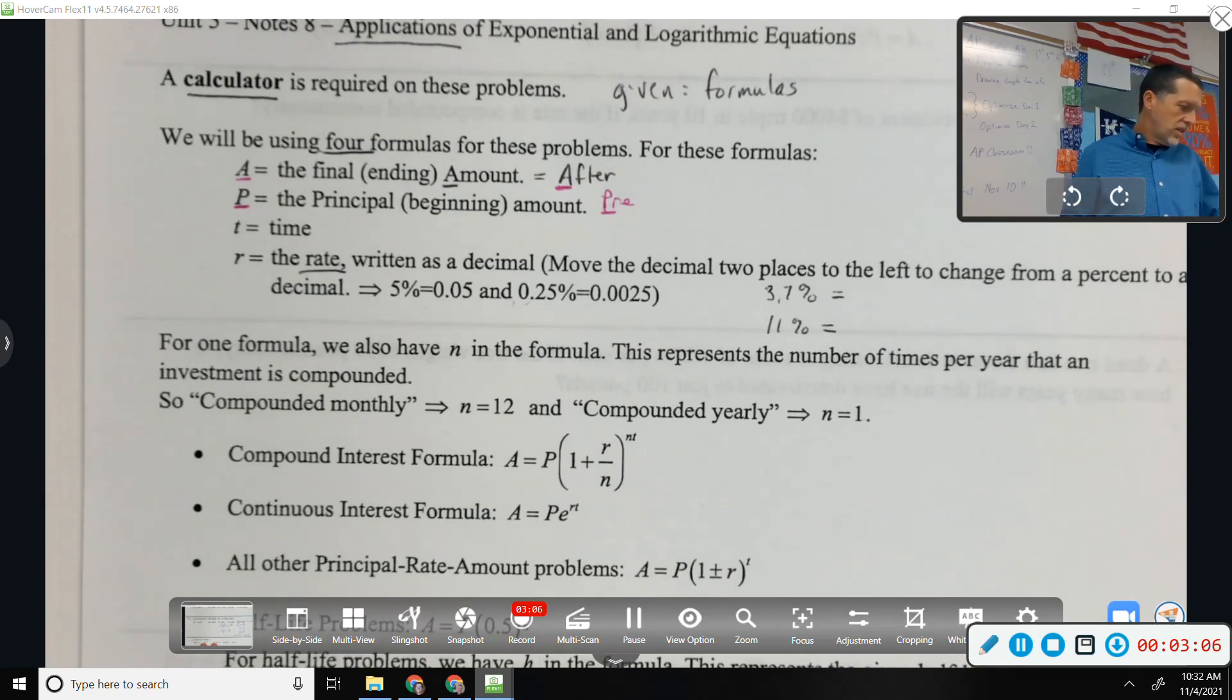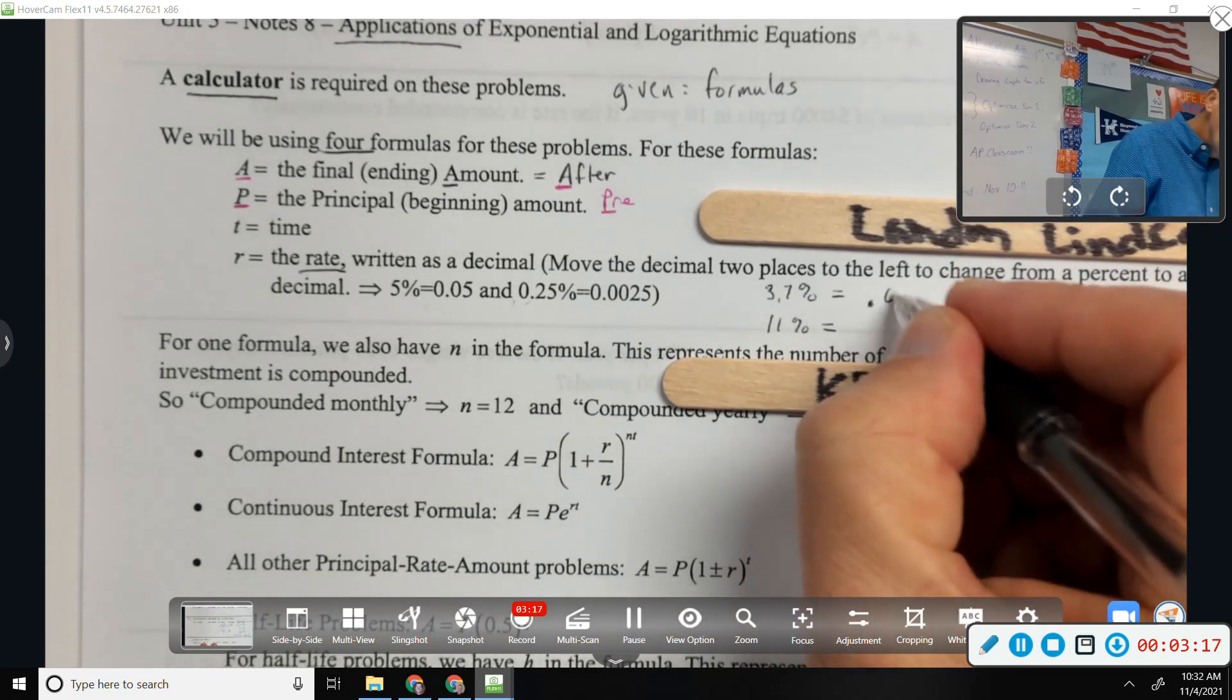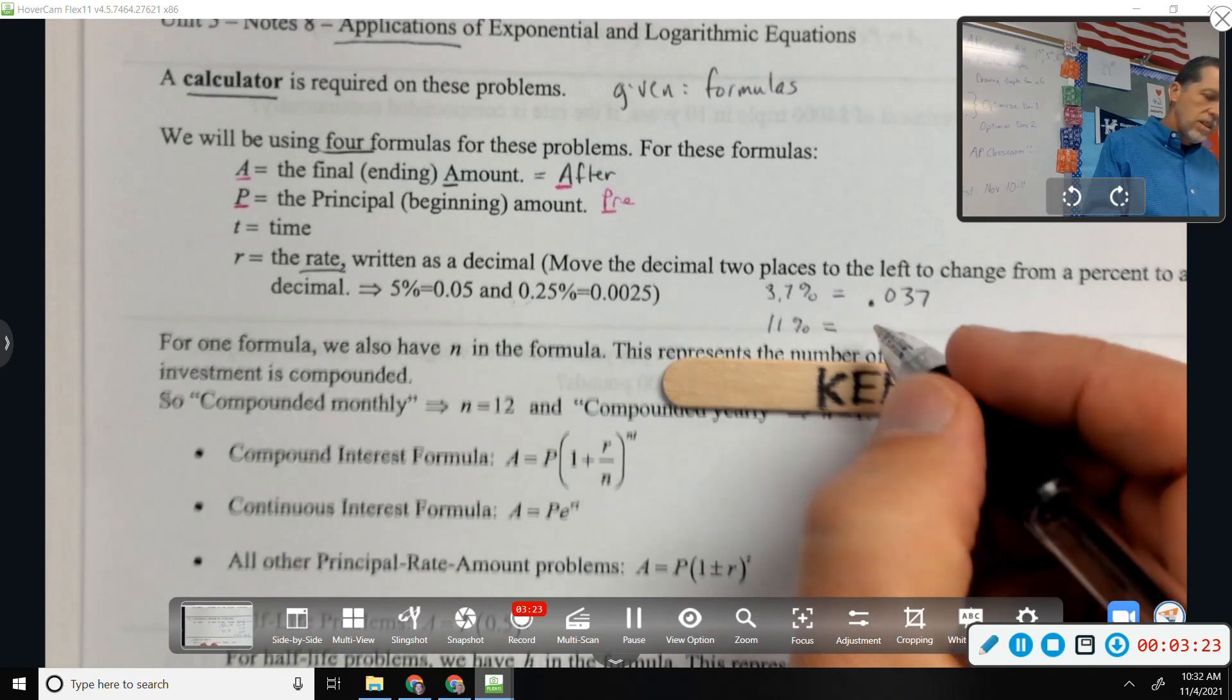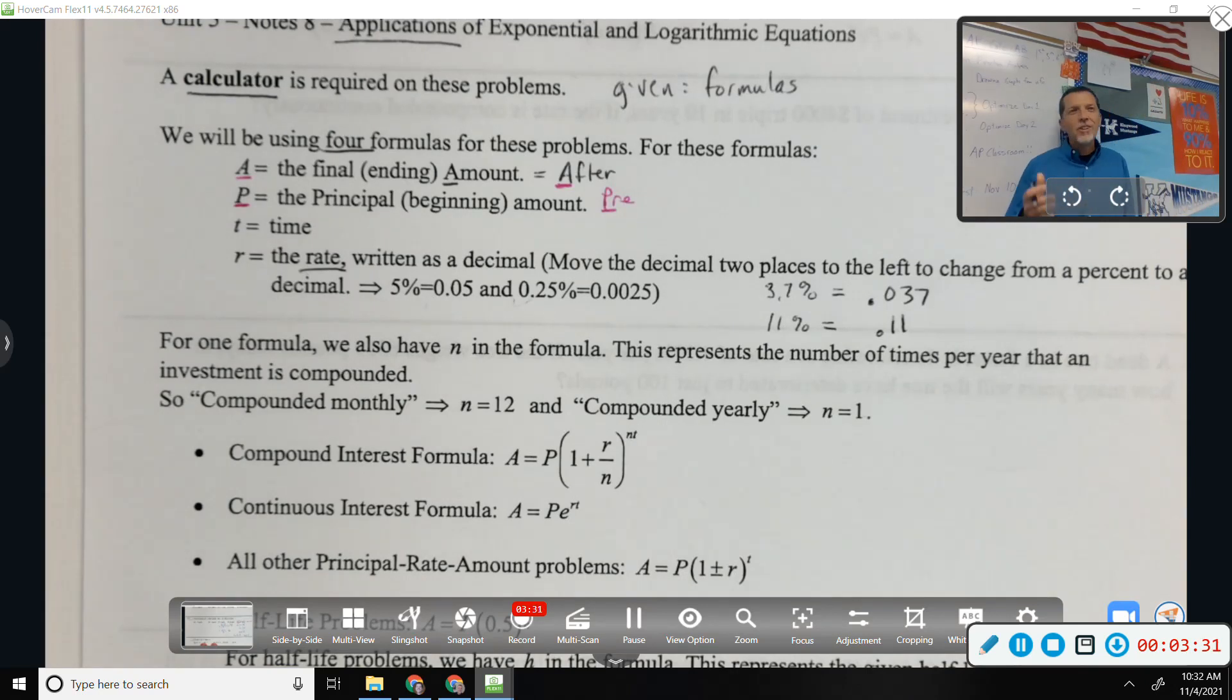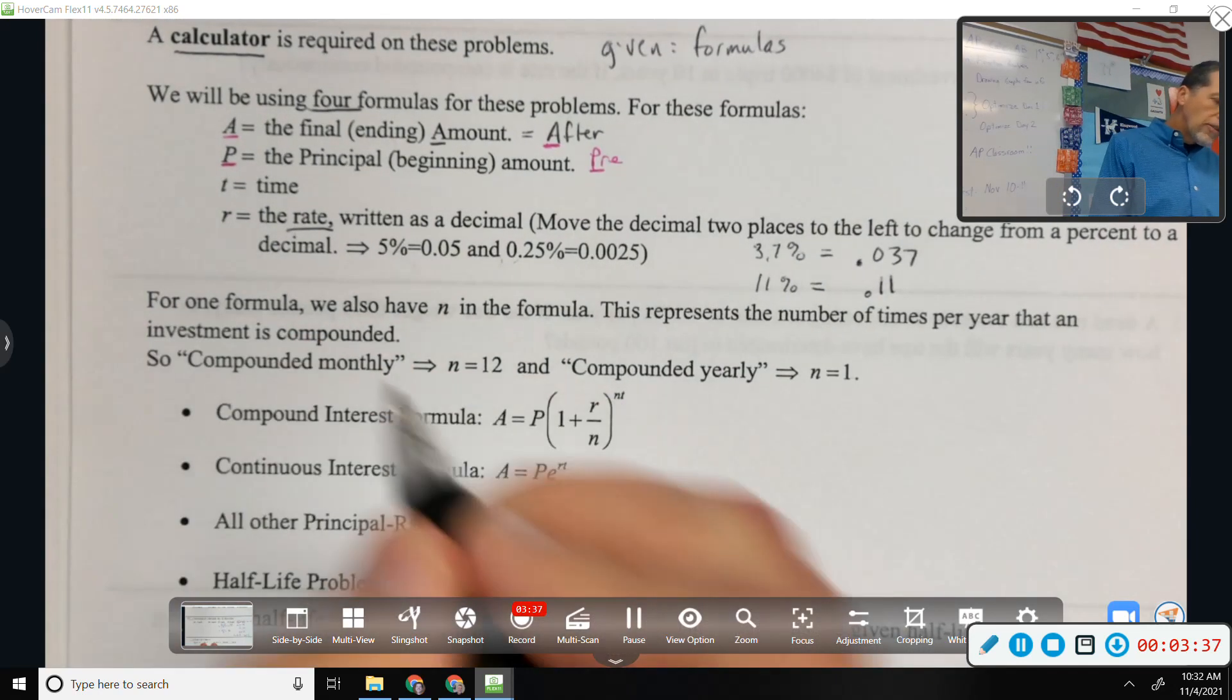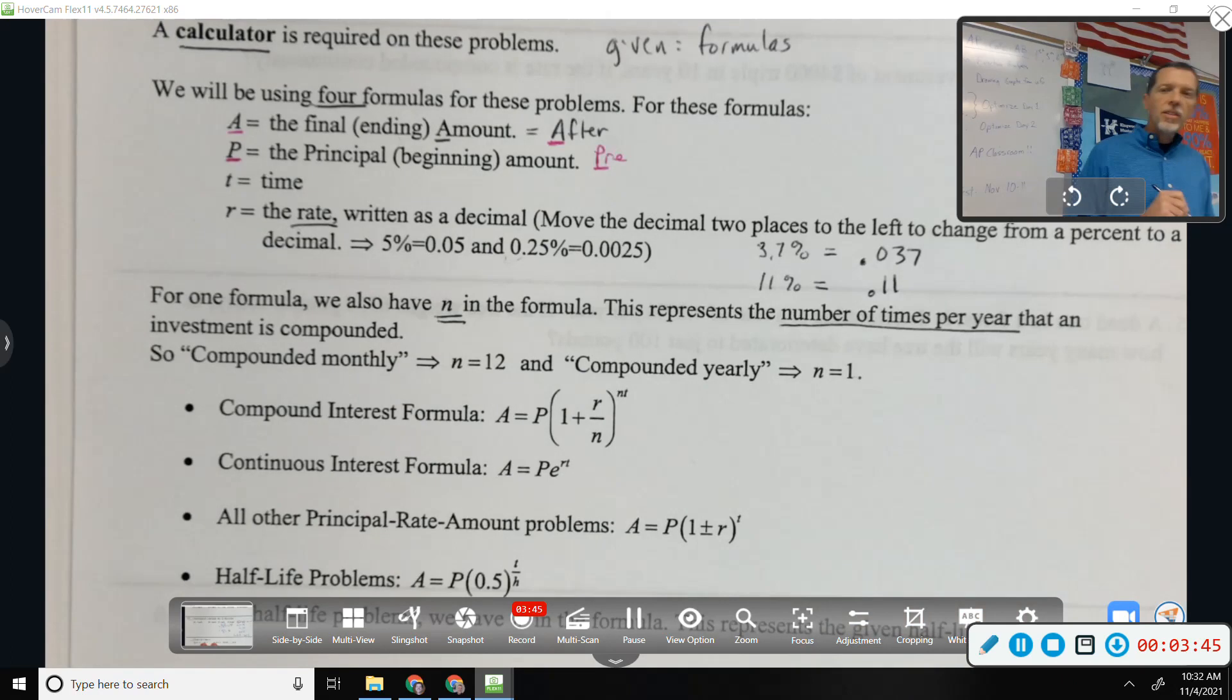So do those two real quick. Don't call it out loud, just write it down. What's 3.7% as a decimal, and what's 11% as a decimal? Landon, how about 3.7%, what's that as a decimal? 0.037, good. Keegan, how about 11% as a decimal? 0.11. Again, the problem with those isn't that it's difficult, it's just remembering to do it at all.